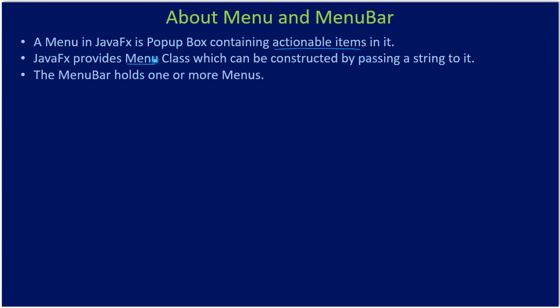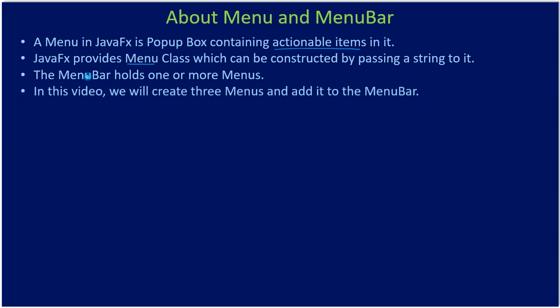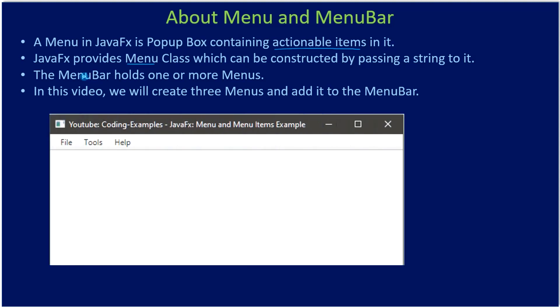The menu bar holds one or more menus. You can pass one or more Menu instances to a MenuBar, allowing you to create multiple menus. In this video we will create three menus and add them to the menu bar: File is menu one, Tools is menu two, and Help is menu three. The menu bar is stacked horizontally at the top edge of the stage.